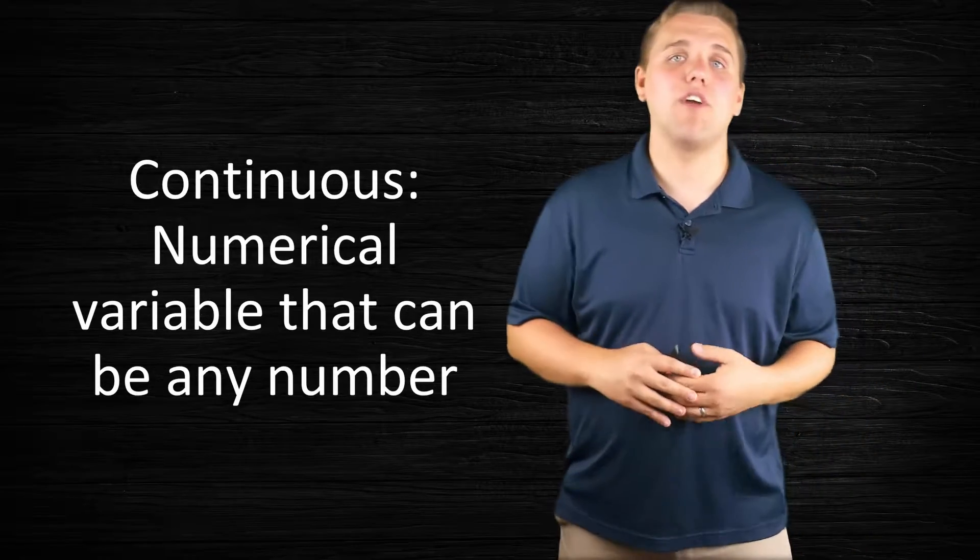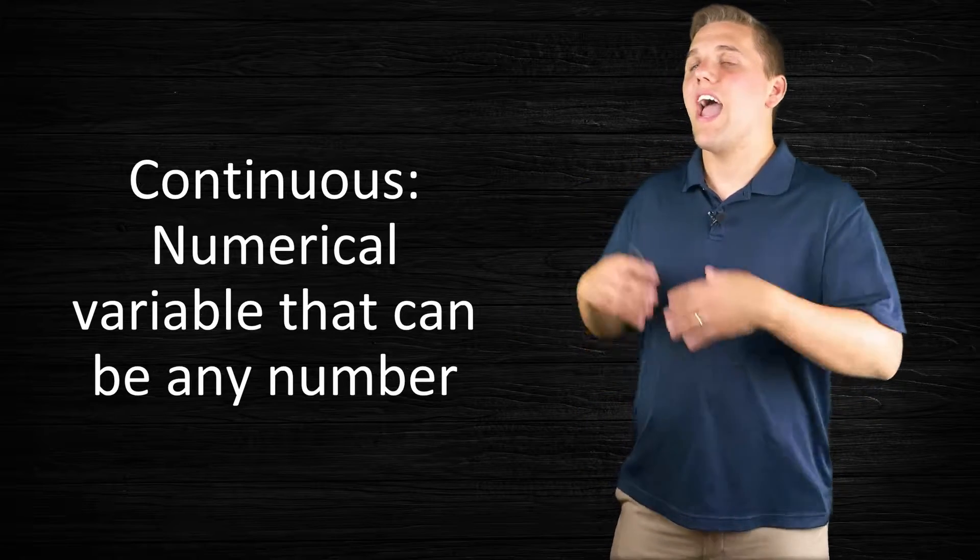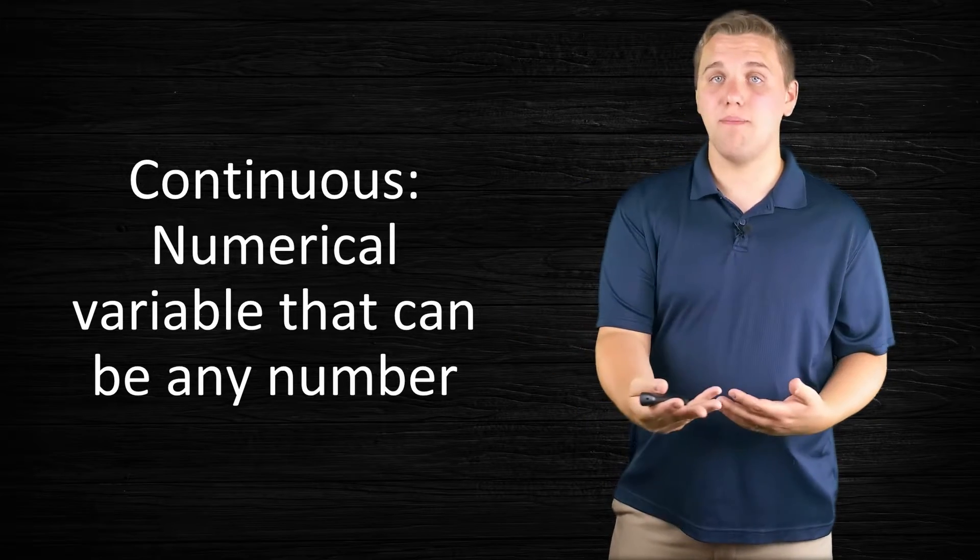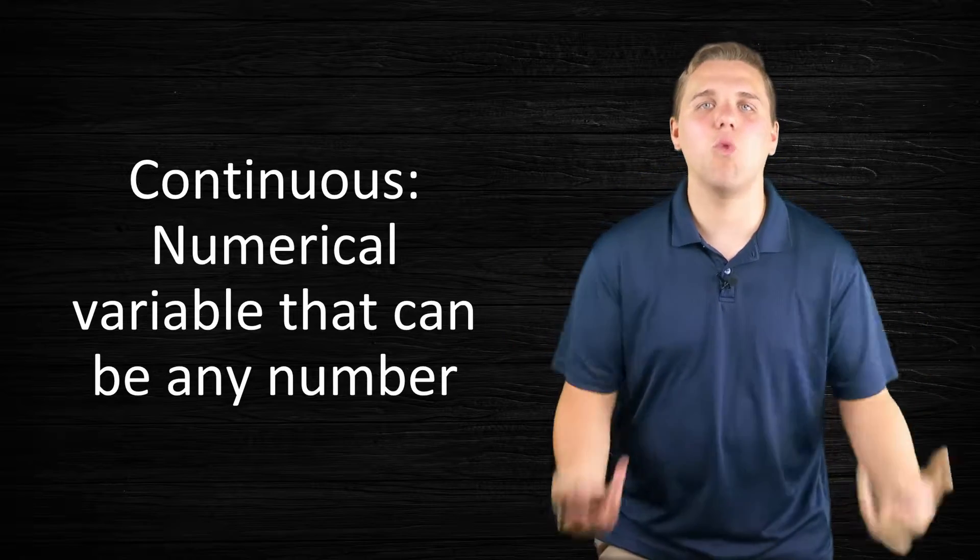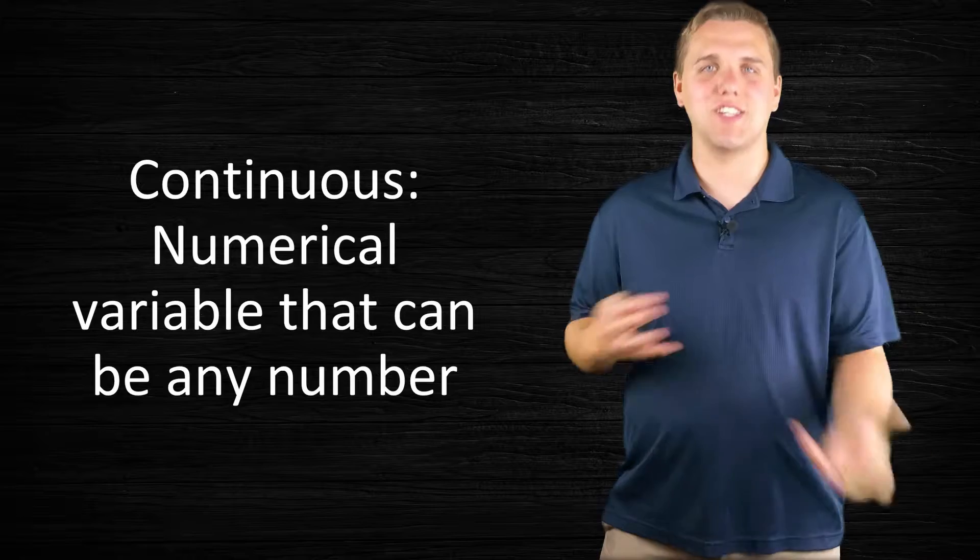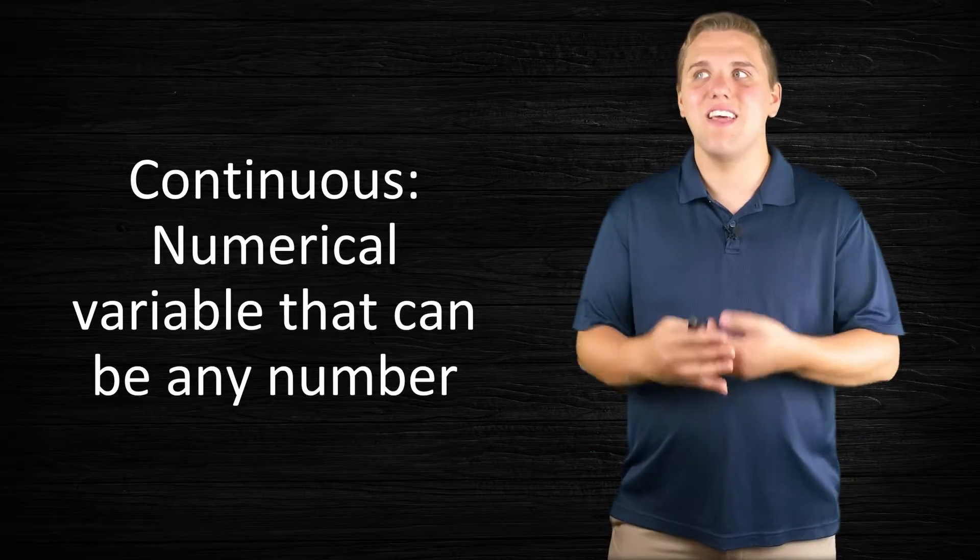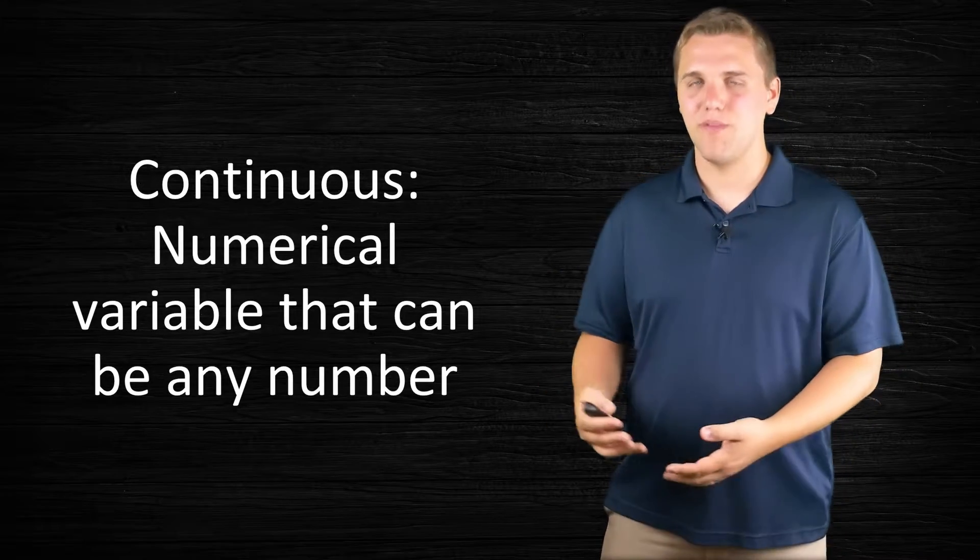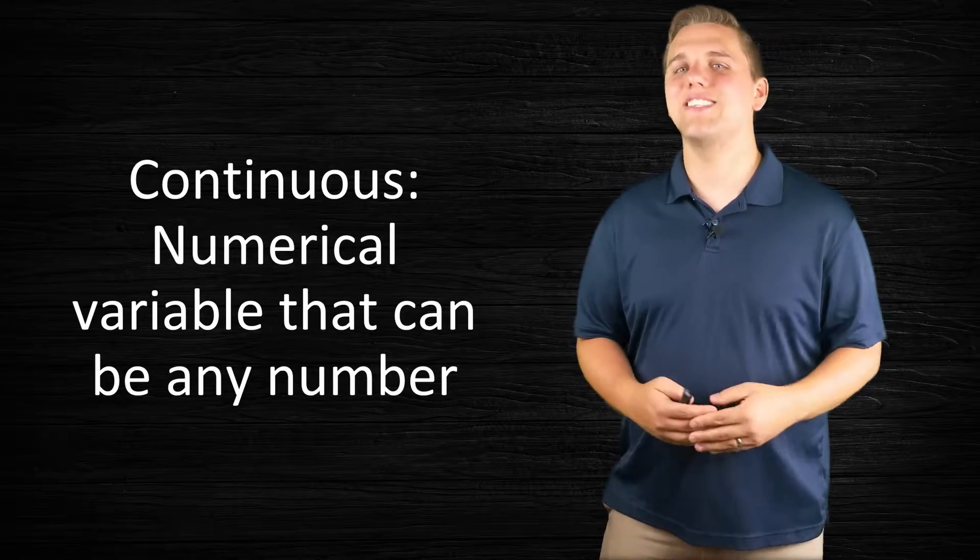The second type of numerical variable is called continuous. These are variables that when you measure them, you can get any value. You can be as precise as you want to be. It's not going to be weird if I say my age is 24.563. If that's the case, then that would be considered a continuous variable. Let's go over some examples in the next lecture. I'll see you guys then.